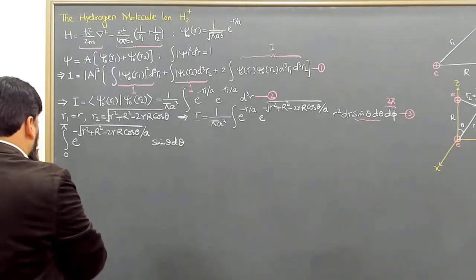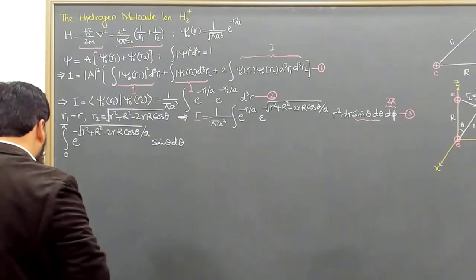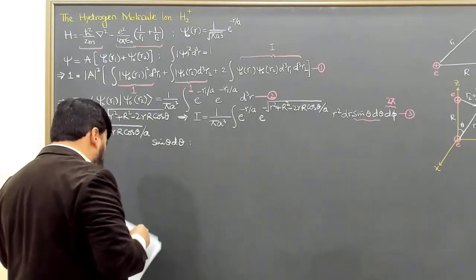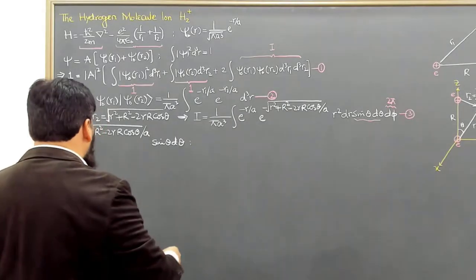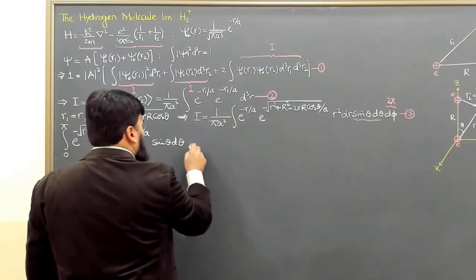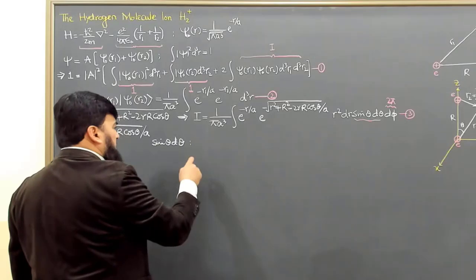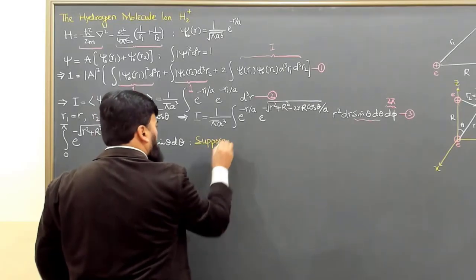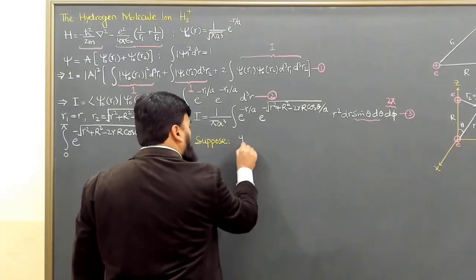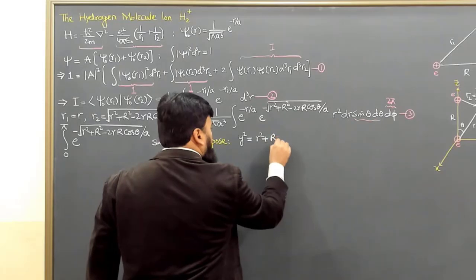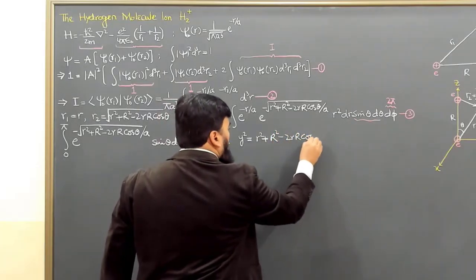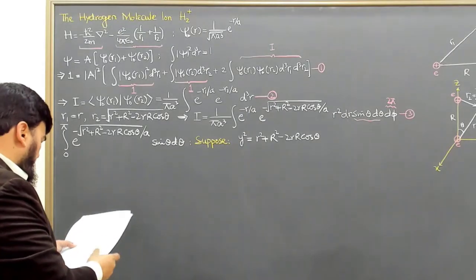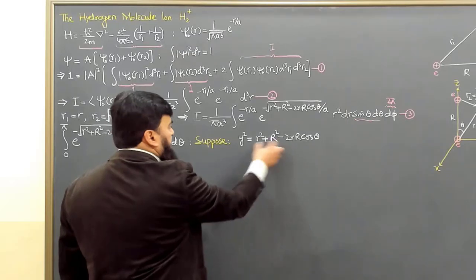To solve this integral we convert to another variable. We suppose that y² equals r² plus R² minus 2rR cosθ. This substitution is made because the integral is not straightforward to evaluate directly in terms of θ.